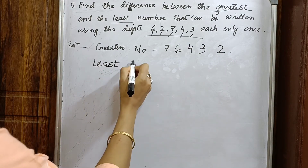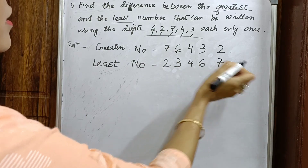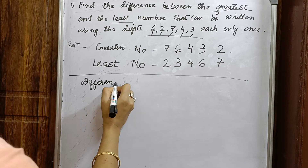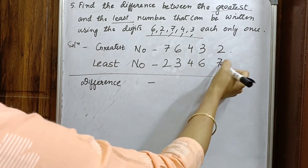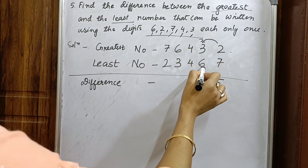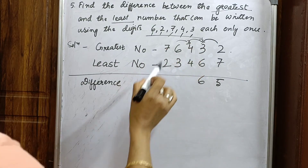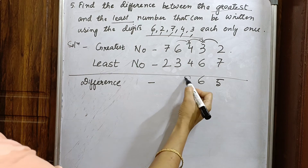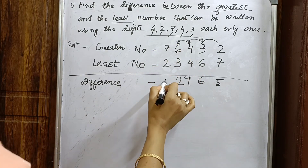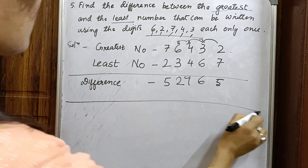The least number is just the opposite — smallest digit first: 2, 3, 4, 6, 7. Now we subtract: 76432 minus 23467. Borrowing as needed — 12 minus 7 is 5, 12 minus 6 is 6, 13 minus 4 is 9, 2, 5 — giving 52,965. The difference between the greatest and least numbers is 52,965.